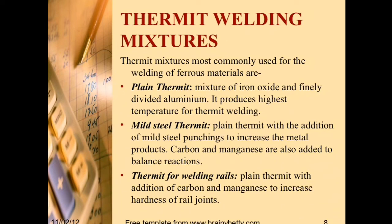Thermite welding mixtures: The thermite mixtures most commonly used for welding of ferrous materials are: Plain thermite — a mixture of iron oxide and finely divided aluminium, which produces the highest temperature for thermite welding. Mild thermite — plain thermite with the addition of mild steel punchings to increase the metal products; carbon and manganese are also added to balance reactions. Thermite for welding rails — plain thermite with the addition of carbon and manganese to increase hardness of rail joints.